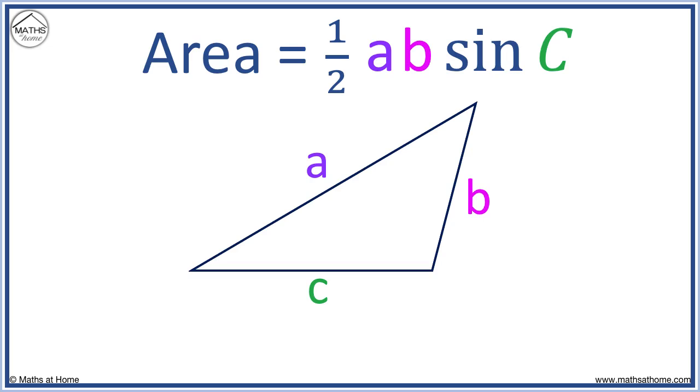Opposite a is the angle shown by capital A, opposite B is B, and opposite C is C. In our formula, we only need to worry about labeling the sides a and b, and we always have the angle C between them.